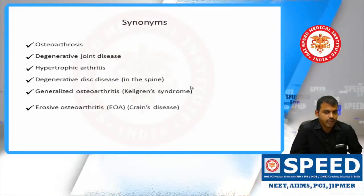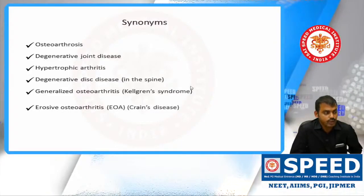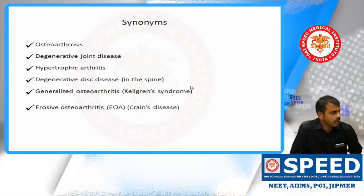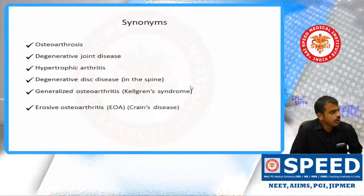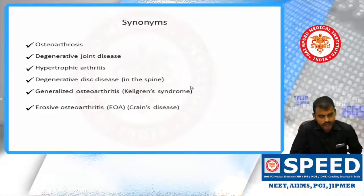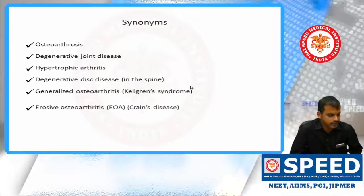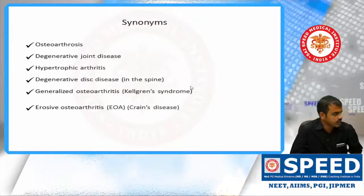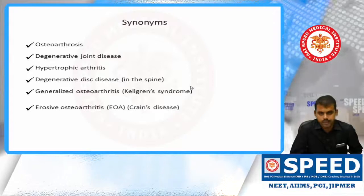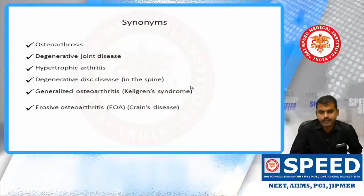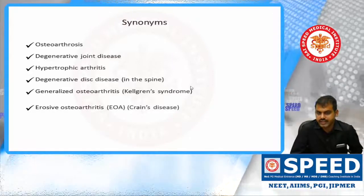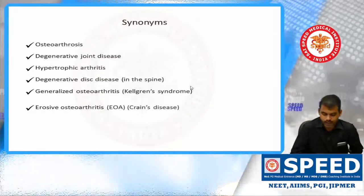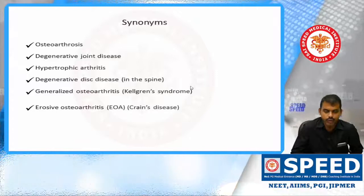There is also a subset of OA called erosive OA, where you will have erosion similar to rheumatoid arthritis, but there are some differences in the erosions. That is called Crain's disease. Erosive OA is a subset of OA.